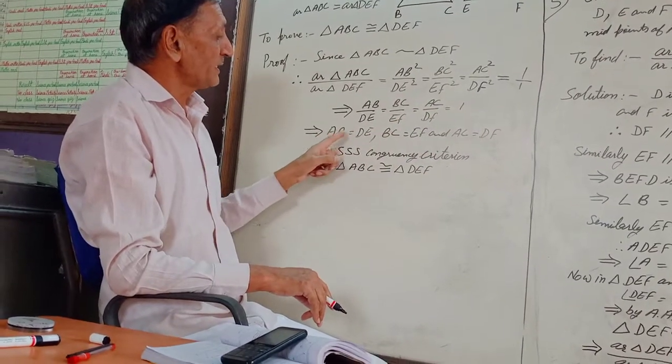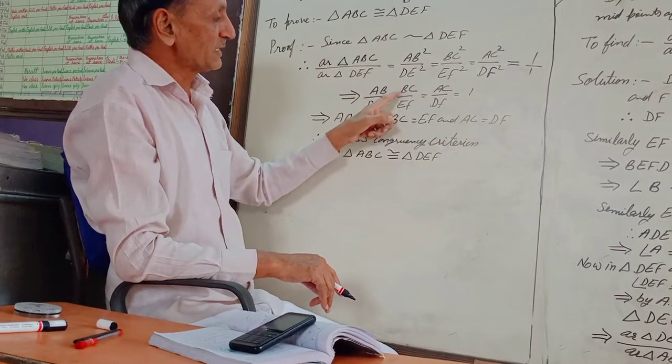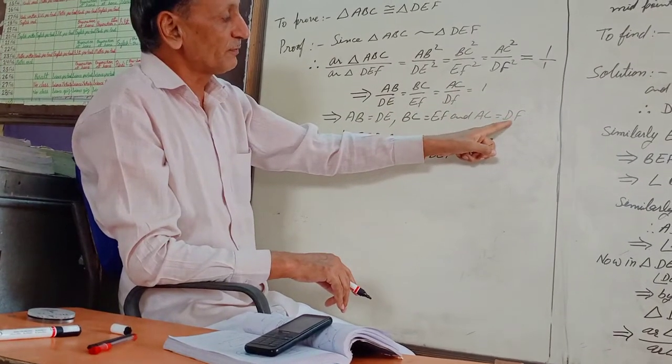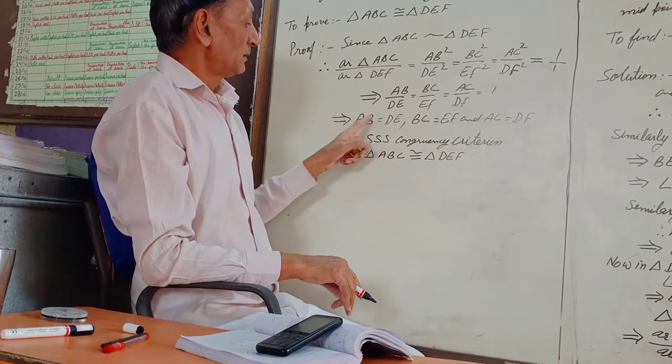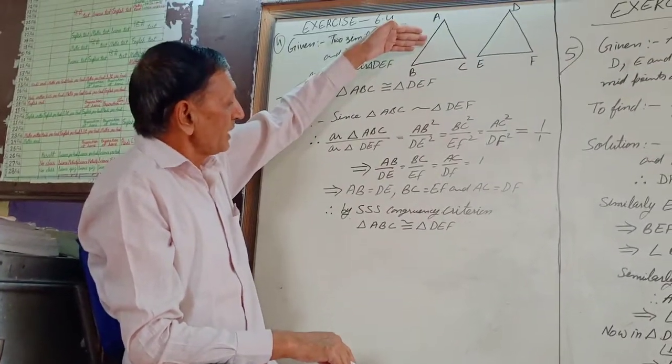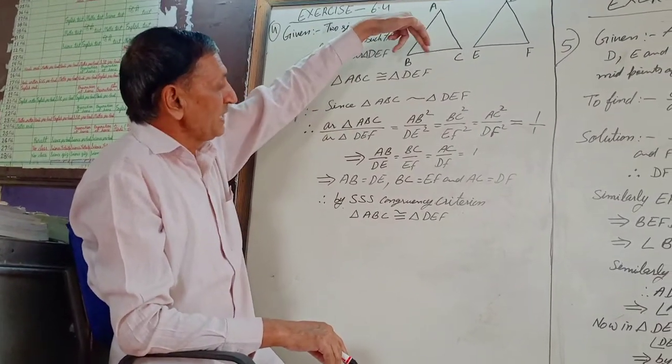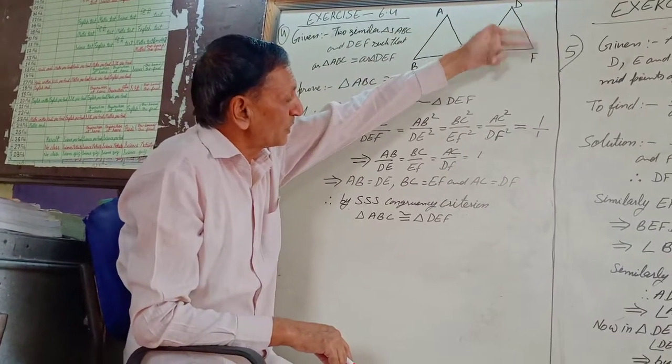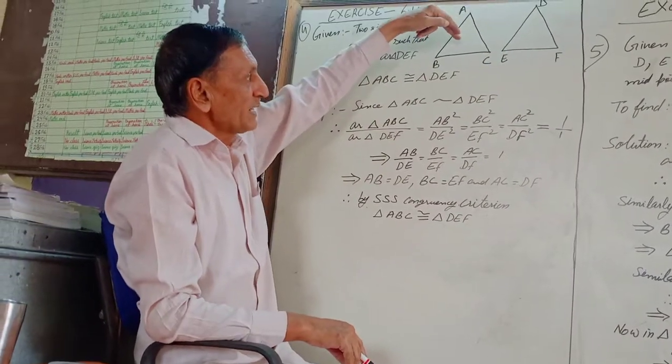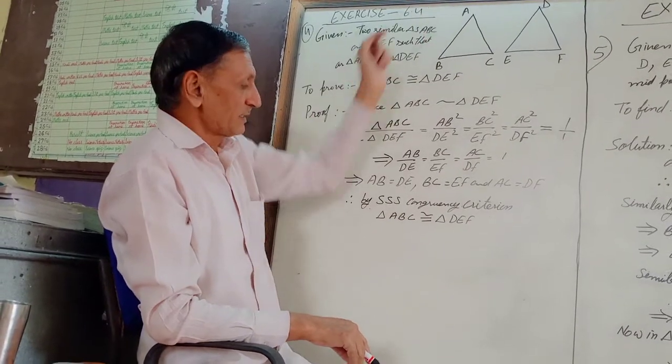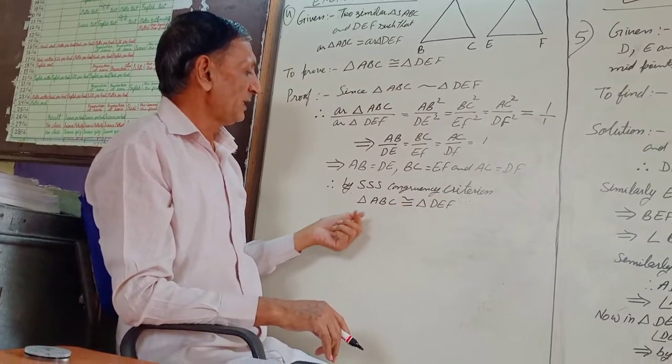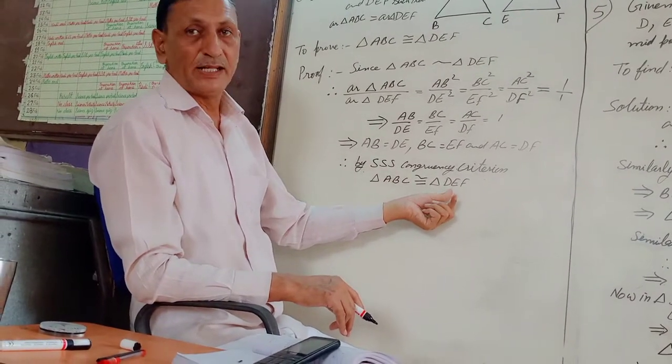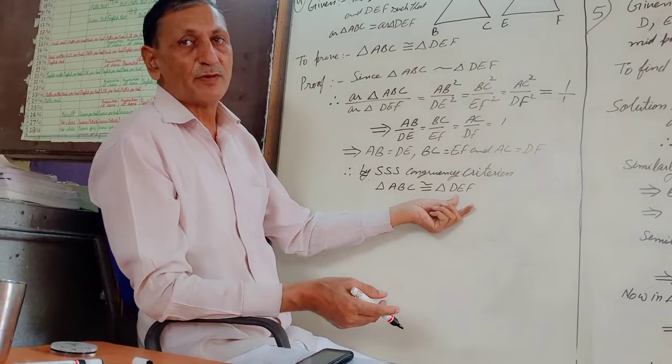This means AB is equal to DE, BC is equal to EF, and AC is equal to DF. Therefore, by SSS congruency criterion, we have triangle ABC congruent to triangle DEF. This is what we were to prove.